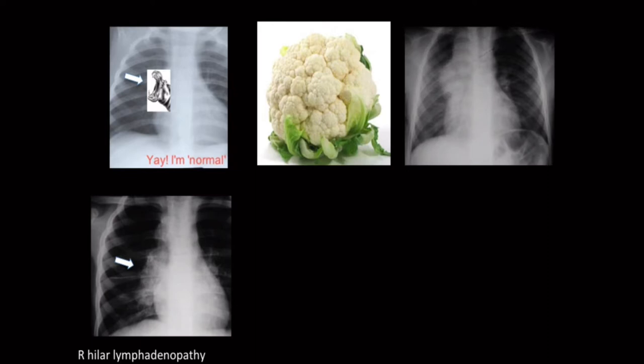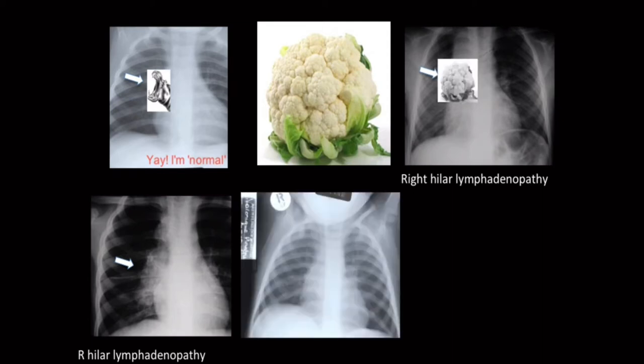Here's another example: a nice round convex structure — that's right hilar lymphadenopathy, and there's your cauliflower in the right hilum. You could also get lymphadenopathy on the left, and if it's big enough it'll extend beyond the cardiac shadow. So there's a cauliflower sticking beyond the margins of the cardiac shadow on the left.